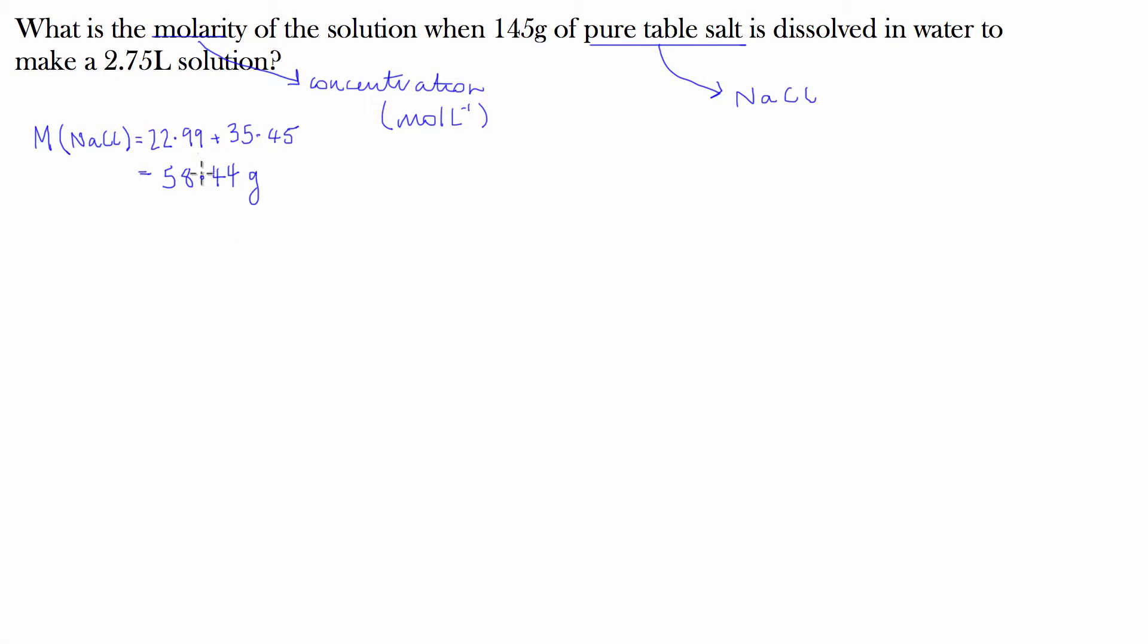So now that we have the molar mass of sodium chloride, we can work out the number of moles in 145 grams. The number of moles, which is denoted as little n of sodium chloride, is equal to the mass that we're given, which is little m, over the molar mass, which is big M. So that's 145 divided by 58.44, and that's going to equal about 2.48 moles. So in 145 grams there's going to be 2.48 moles of sodium chloride.